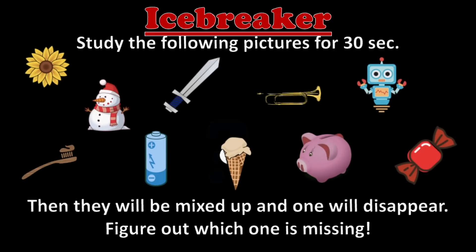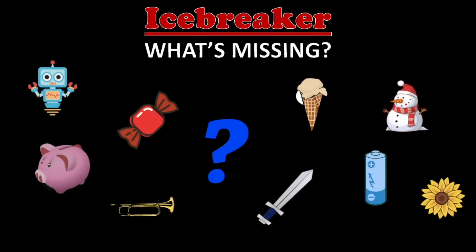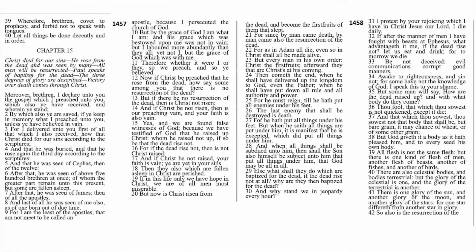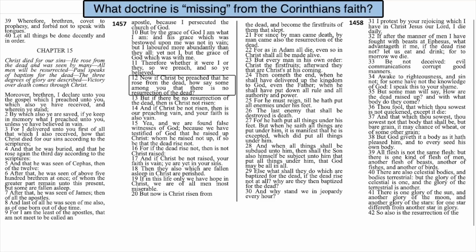Were you able to identify the missing picture? Well, do you remember how we said that Corinthians was a book of problems? Paul saved one of the biggest and most serious ones for last. The Corinthians also have a doctrinal problem — their faith is missing a key truth. As they're doubting, they're denying one of the core doctrines of the gospel. Which doctrine is missing from their faith? According to verse 12.